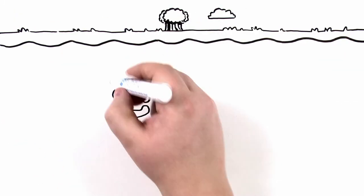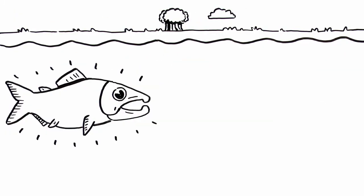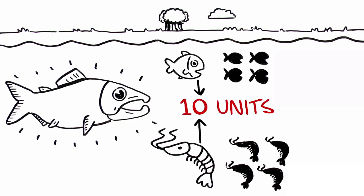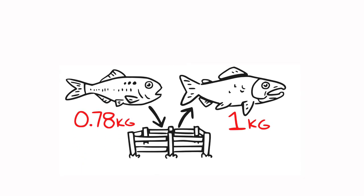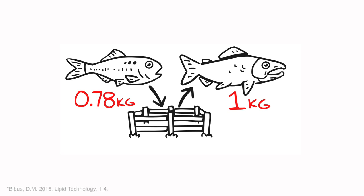In the natural environment, predatory fish like salmon feed primarily on other fish and crustaceans. It takes at least 10 kilograms of low trophic fish and crustaceans to produce 1 kilogram of predator fish. But due to advances in modern aquaculture, farm salmon currently only requires 0.78 kilograms of menhaden to produce one kilogram of salmon. This is by far more efficient than the conversion in nature.